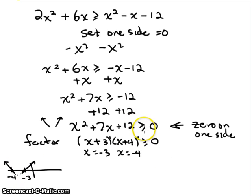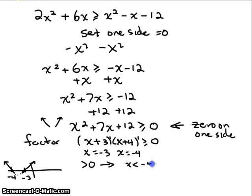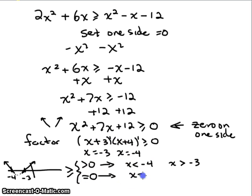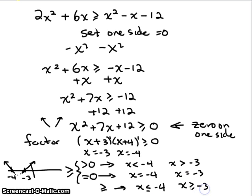We have greater than or equal to zero, so we solve two cases: where is it greater than zero — for x < -4 and x > -3 — and where is it equal to zero — at x = -4 and x = -3. So the solution is x ≤ -4 or x ≥ -3: from x = -4 leftward and from x = -3 rightward, all y values are either greater than or equal to zero.